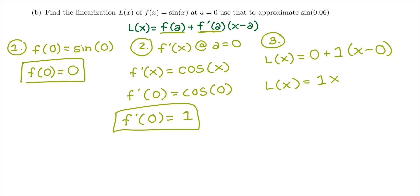So we are asked to take this linearization, 1x, to approximate sine of 0.06. So f of 0.06 will be approximately the same thing as L of 0.06, which for this is going to be 1 times 0.06. So our approximation is 0.06.